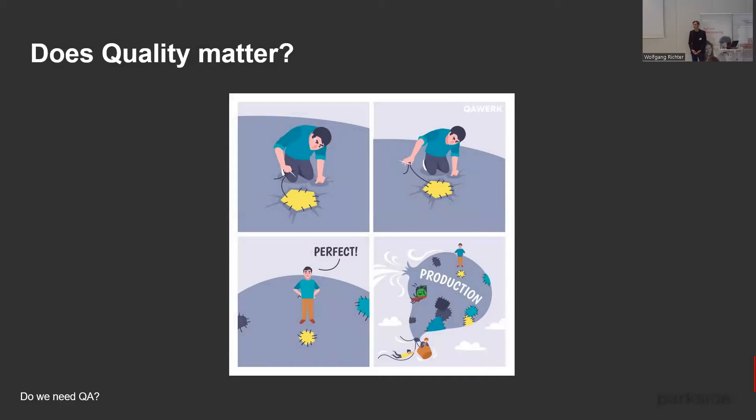At the same time, our job as QA engineers is to be invisible. When the application works properly, a user or customer doesn't even know that someone worked on software testing. But once a bug appears and annoys them, QAs become very visible — everyone wants to know who tested that. In fact, today we are all users of many applications which make our life easier, or depending on quality, even more difficult.